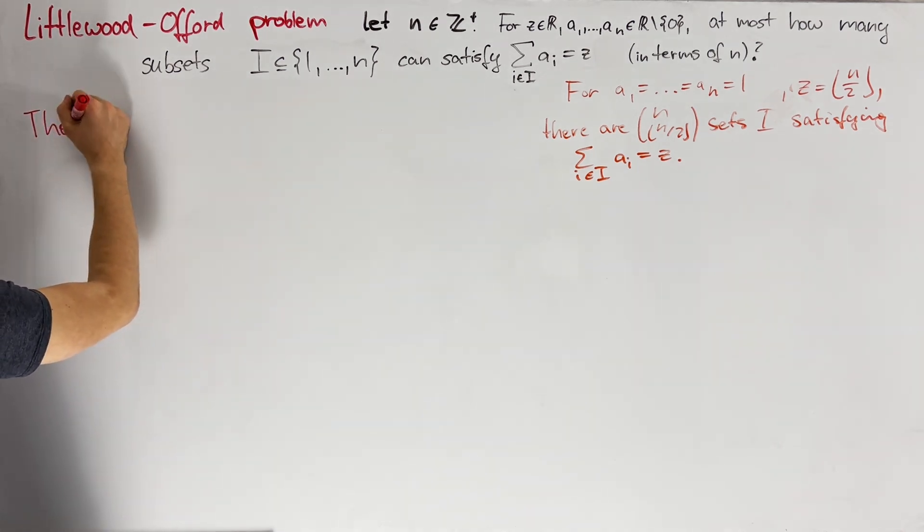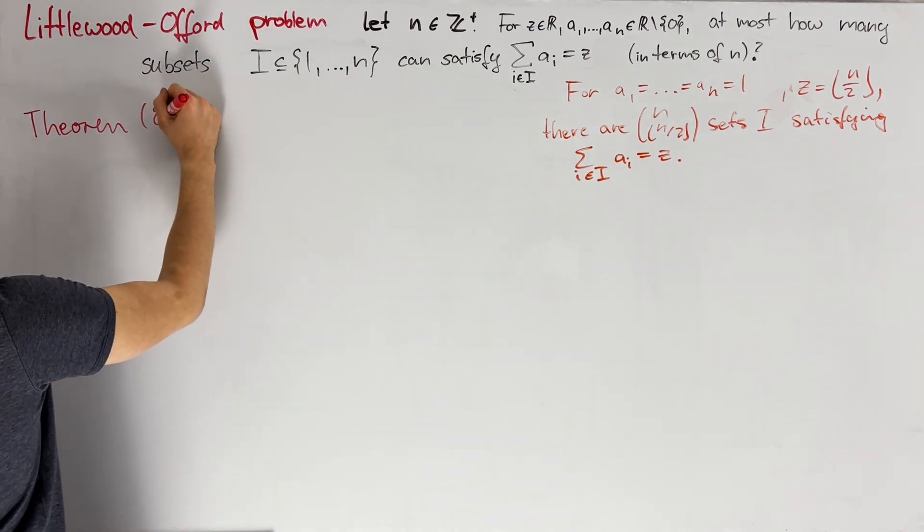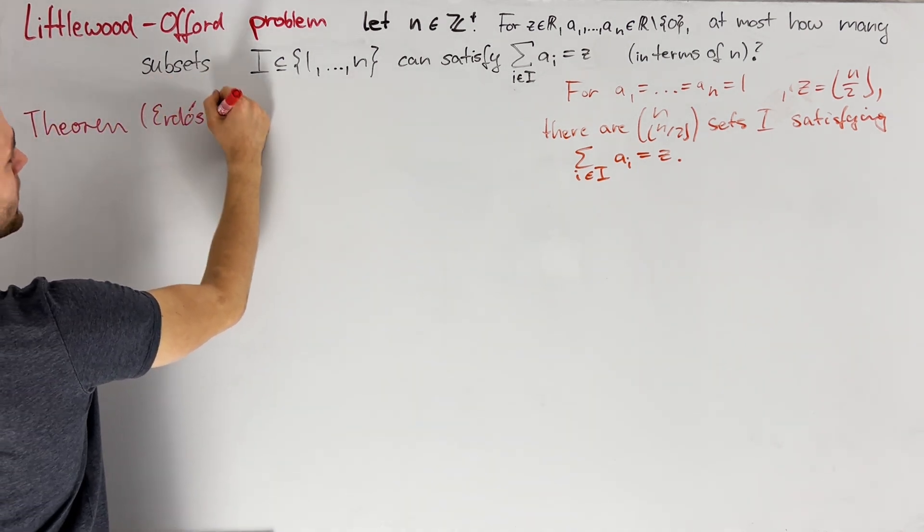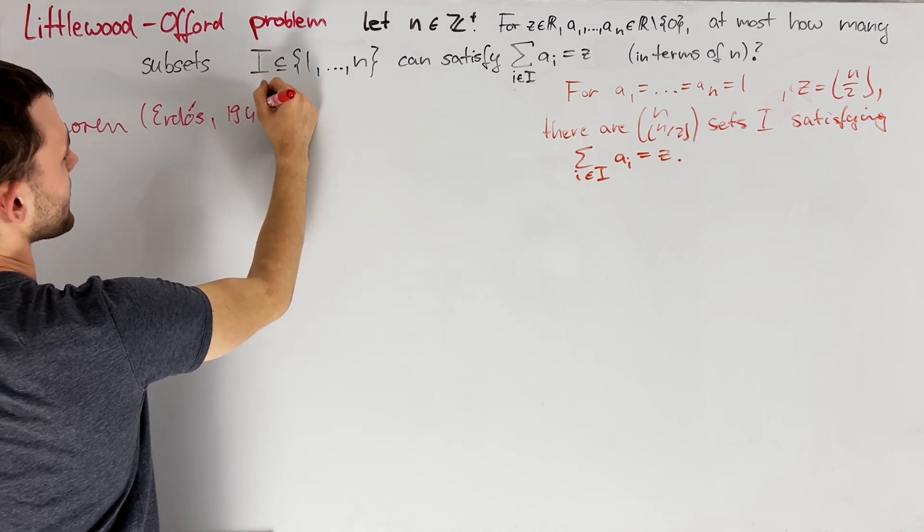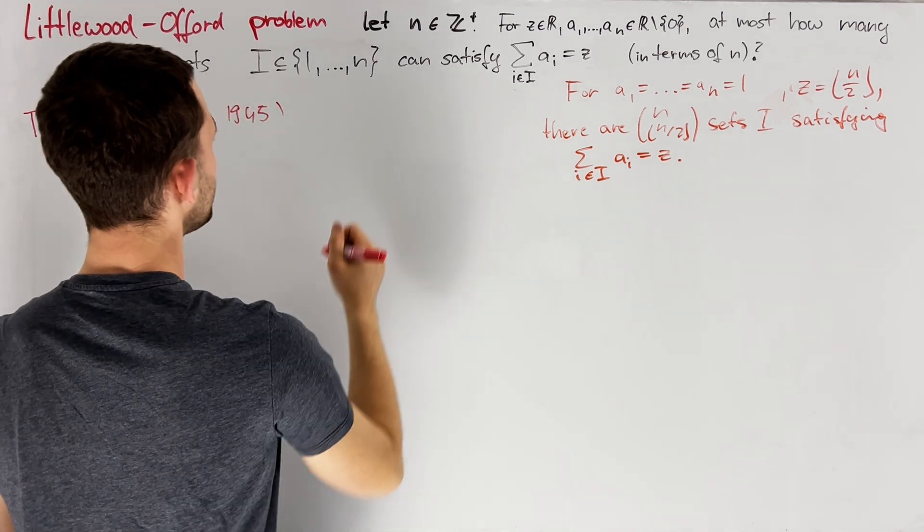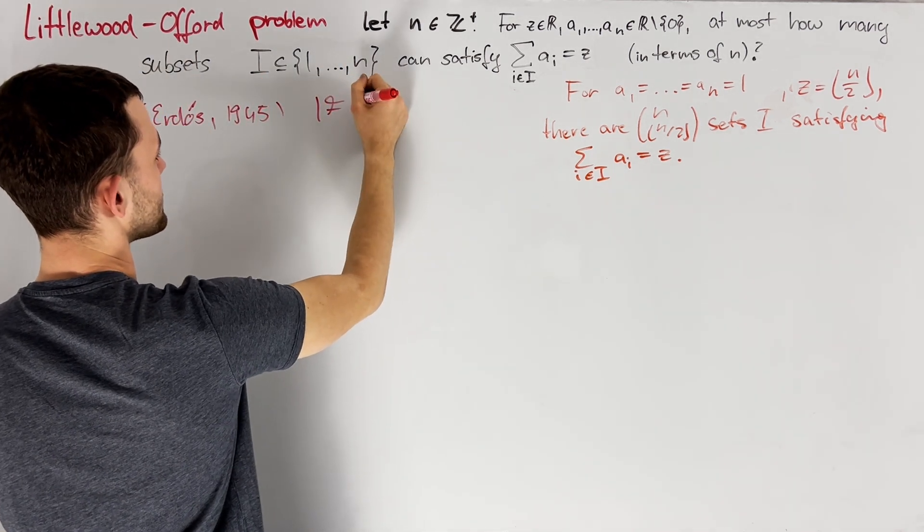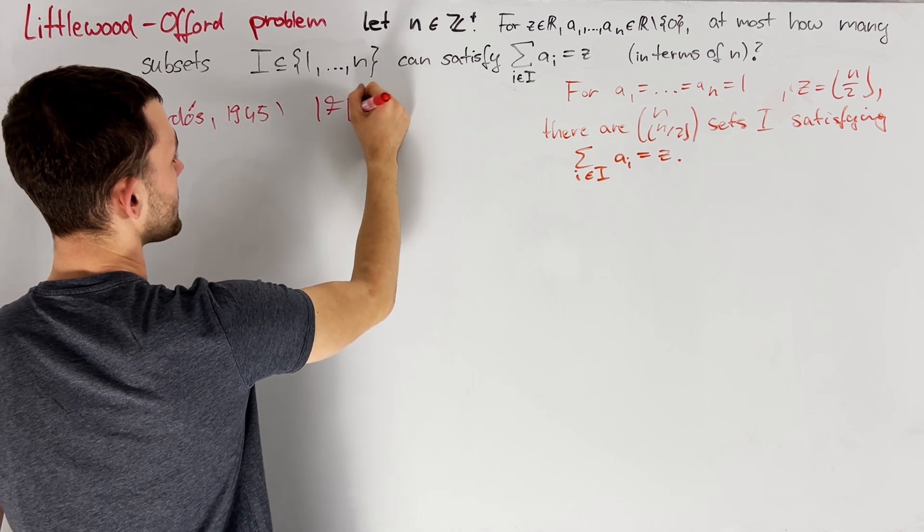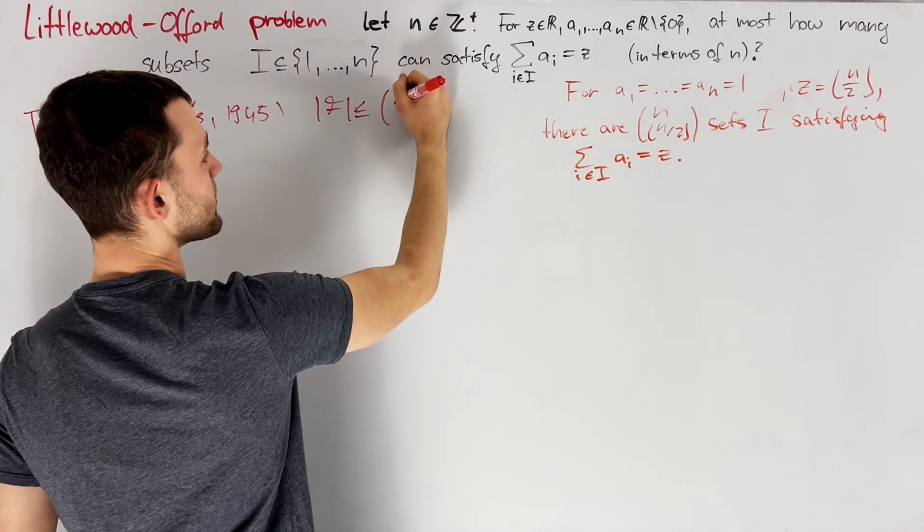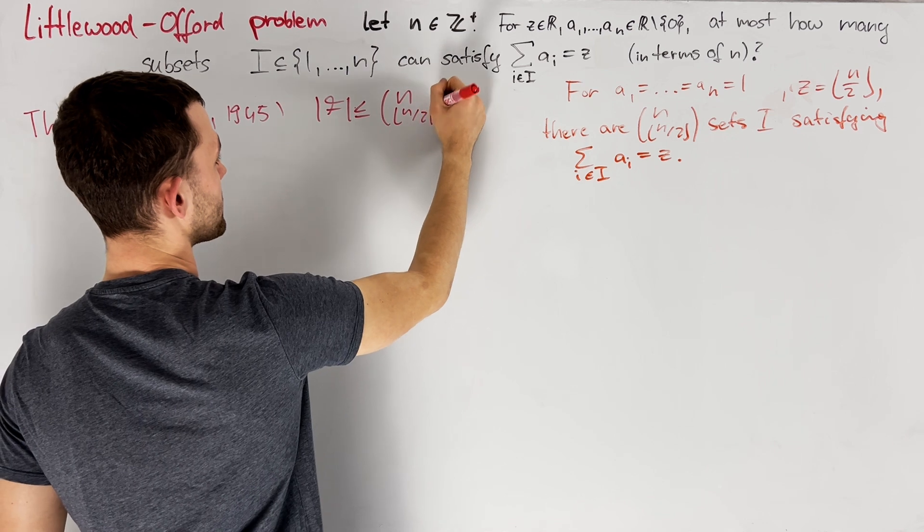Namely, as proven by Erdős in 1945, we have always that the number of sets i satisfying this, and let's maybe call this family of sets F, is less than or equal to n choose the floor of n over 2.